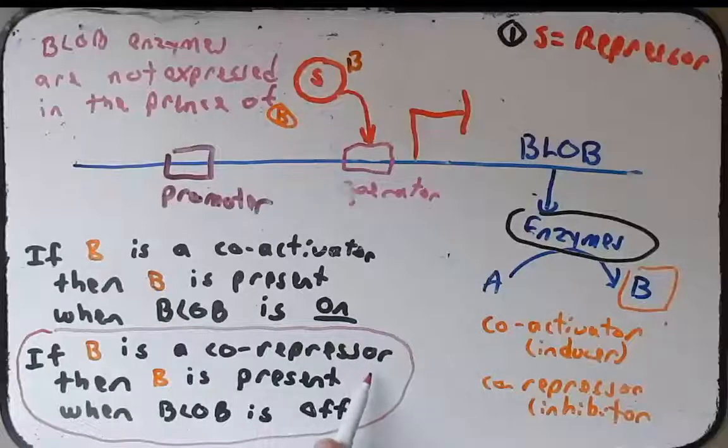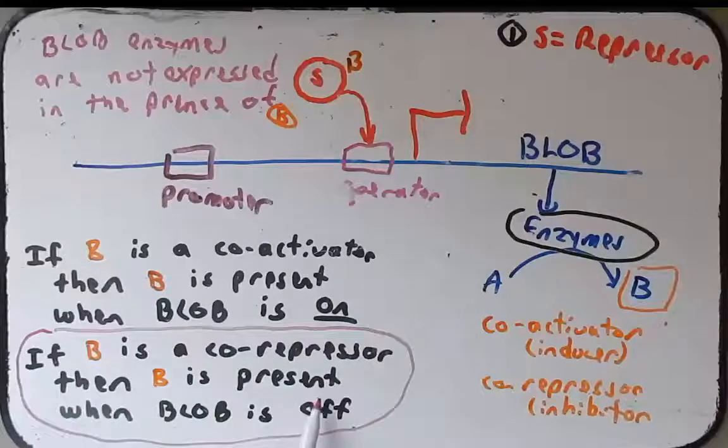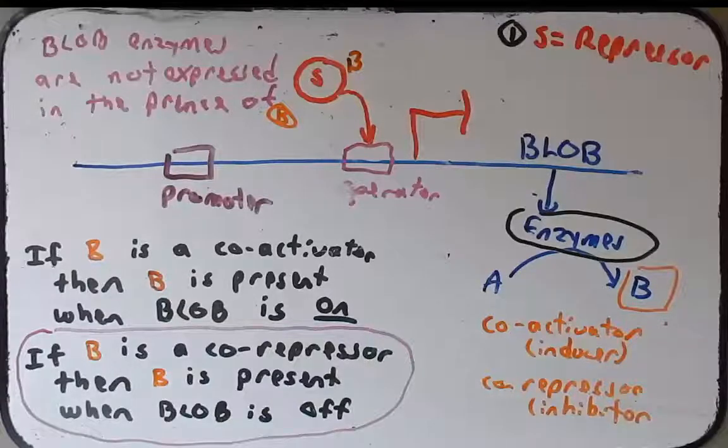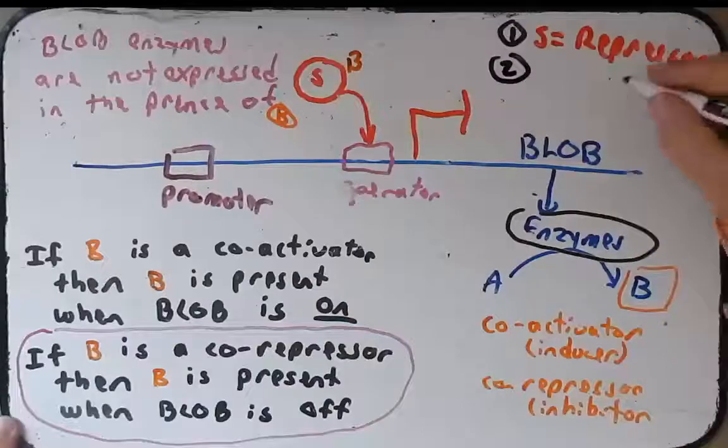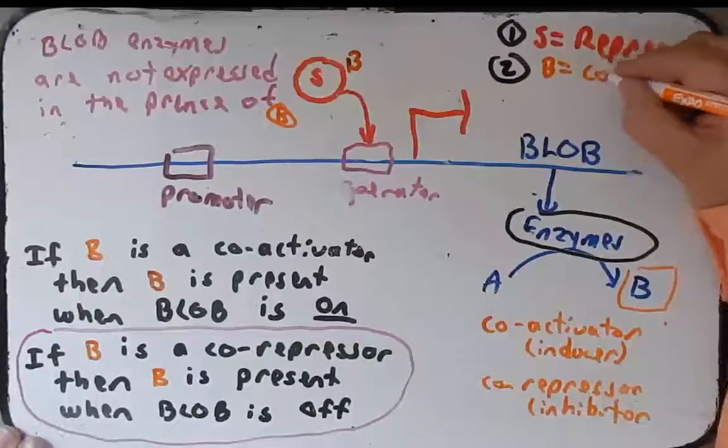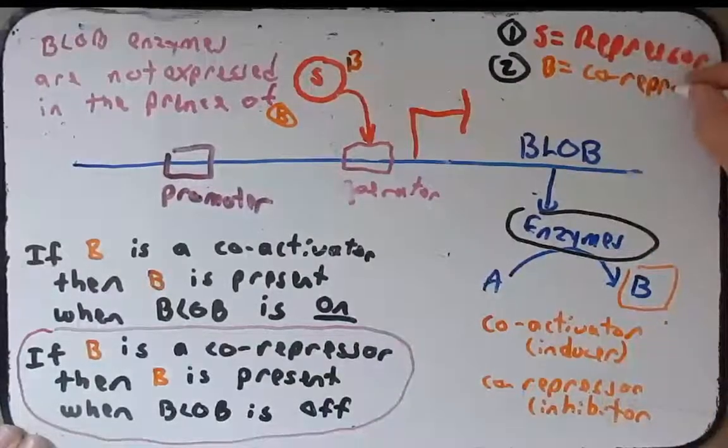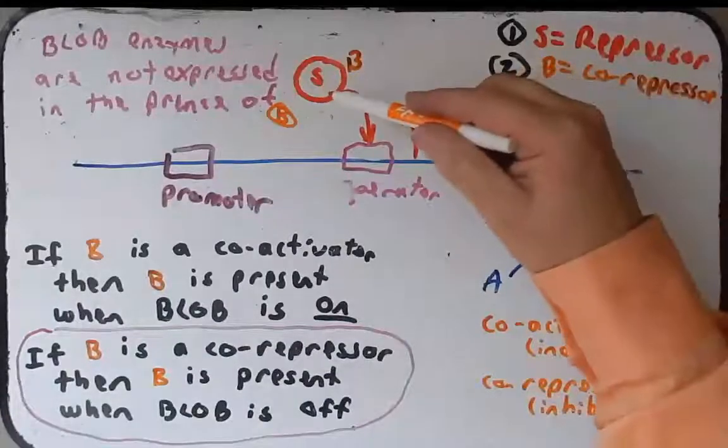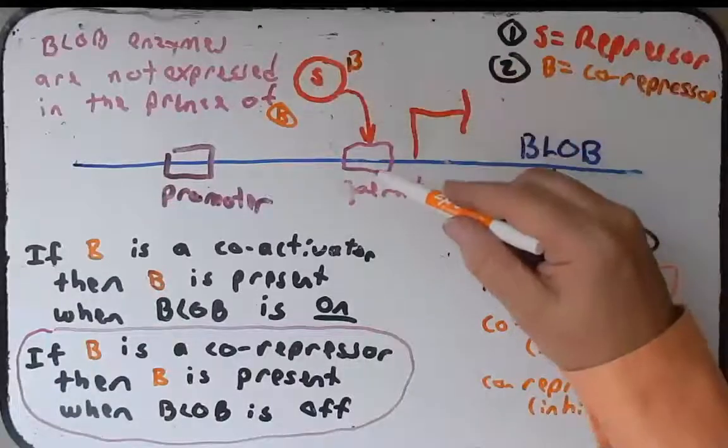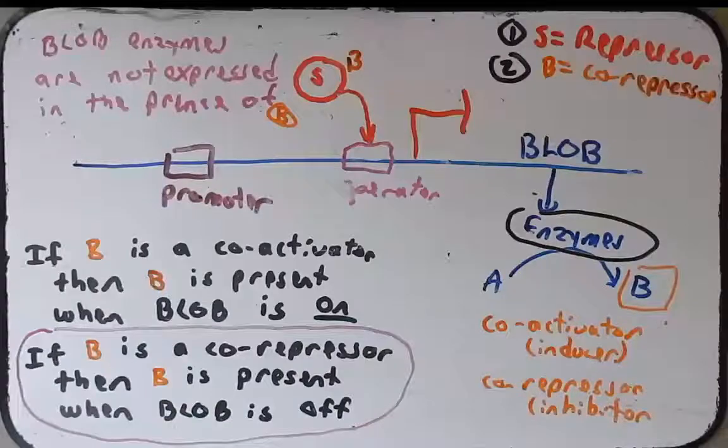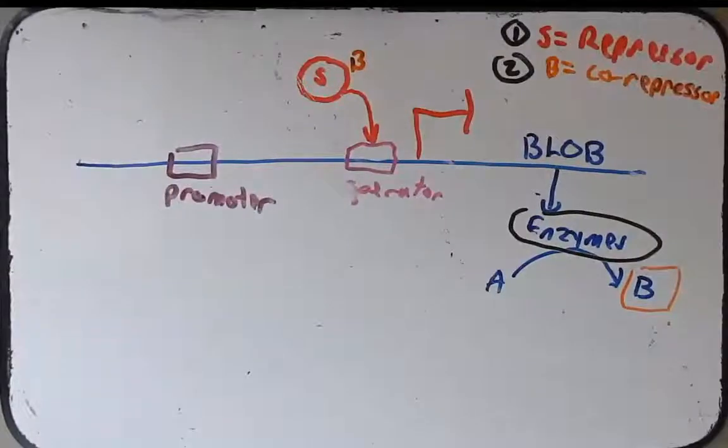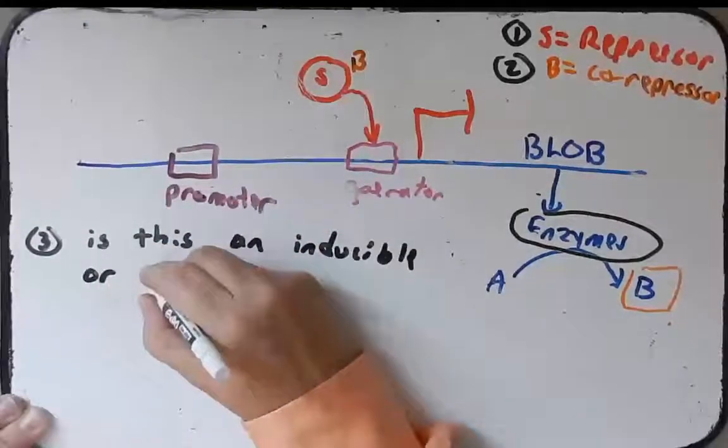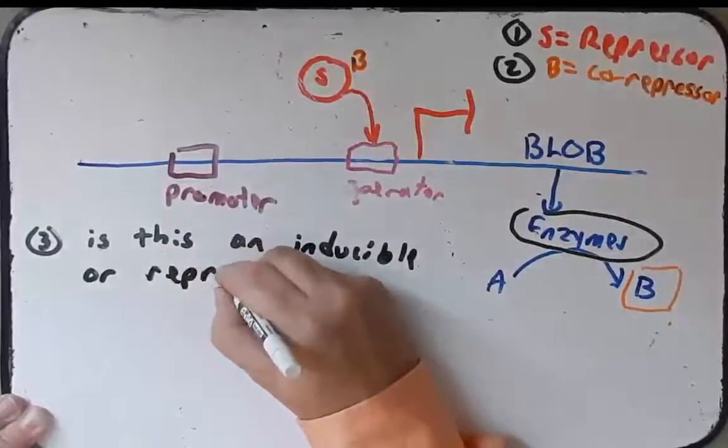So from this, we can be confident in answering our next question. And that is that B is a co-repressor, meaning that when B is present, it will help the repressor by binding to it to keep the operon off. Now the question has one more part. And the next question that is asked is, is this an inducible or repressible operon?